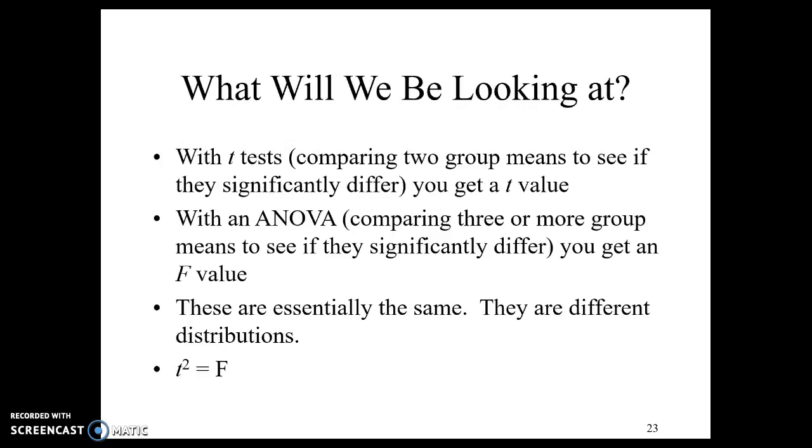So with a t-test we are comparing two groups to see if they differ and we get a t-value. We use a t-distribution. With ANOVA, we get an f-value. We're using the f-distribution. So our t-test uses t, obviously. ANOVA uses f.